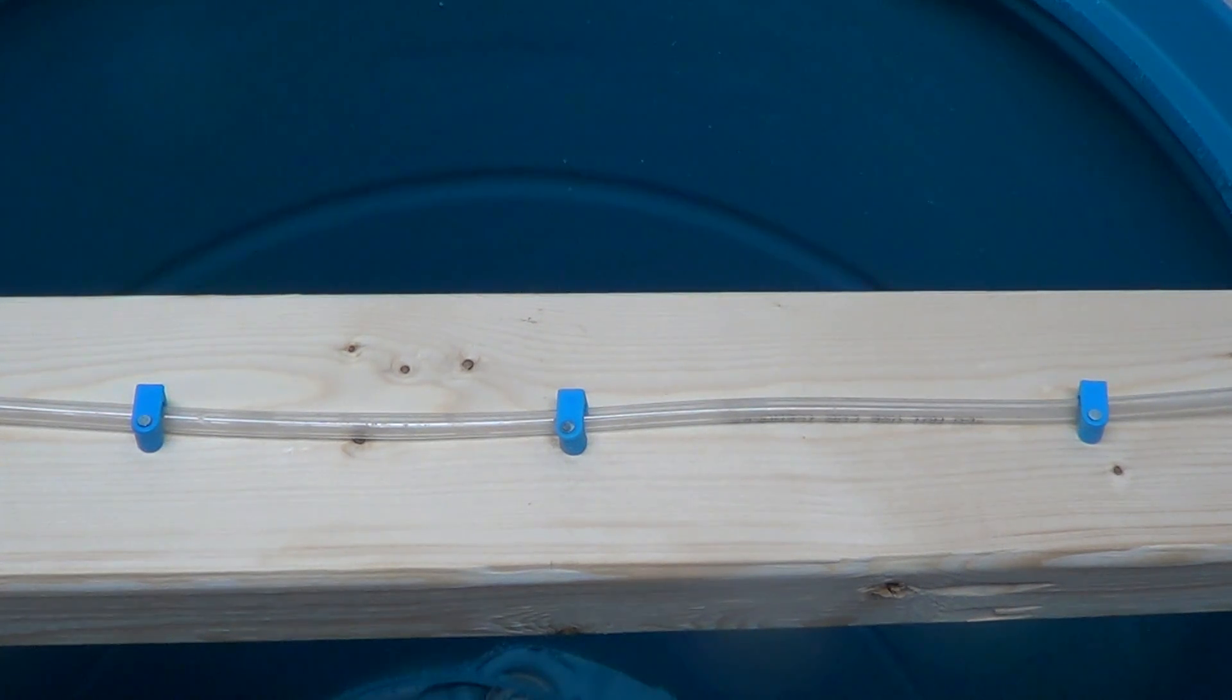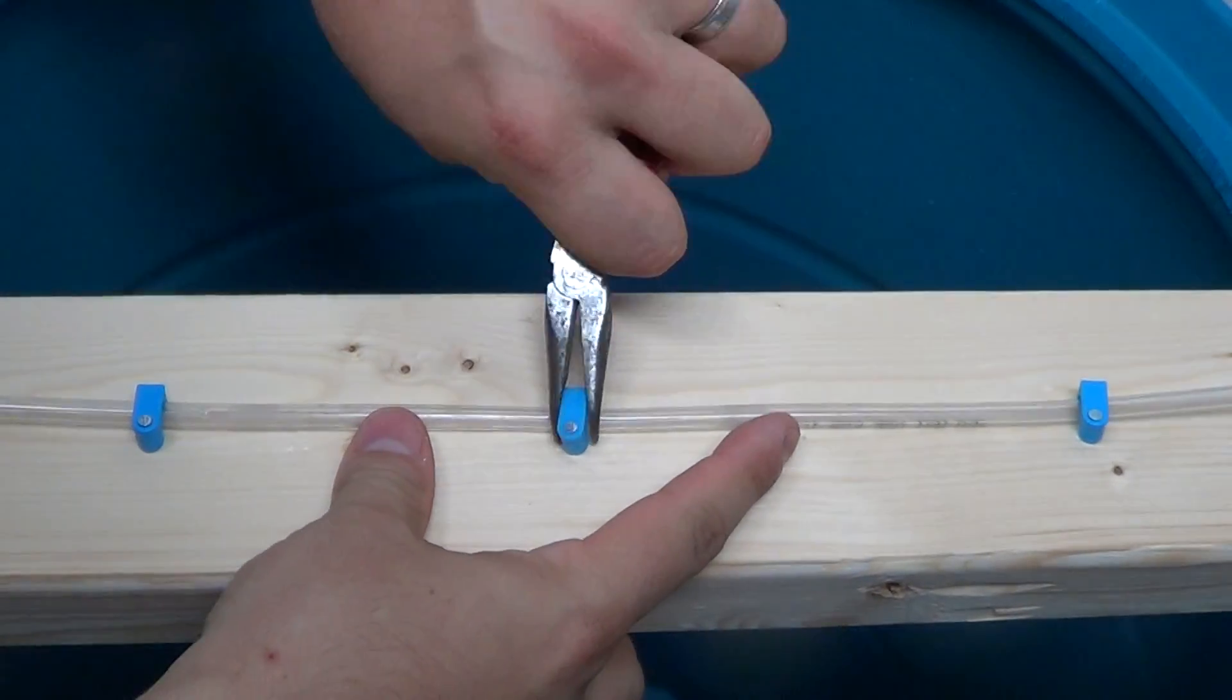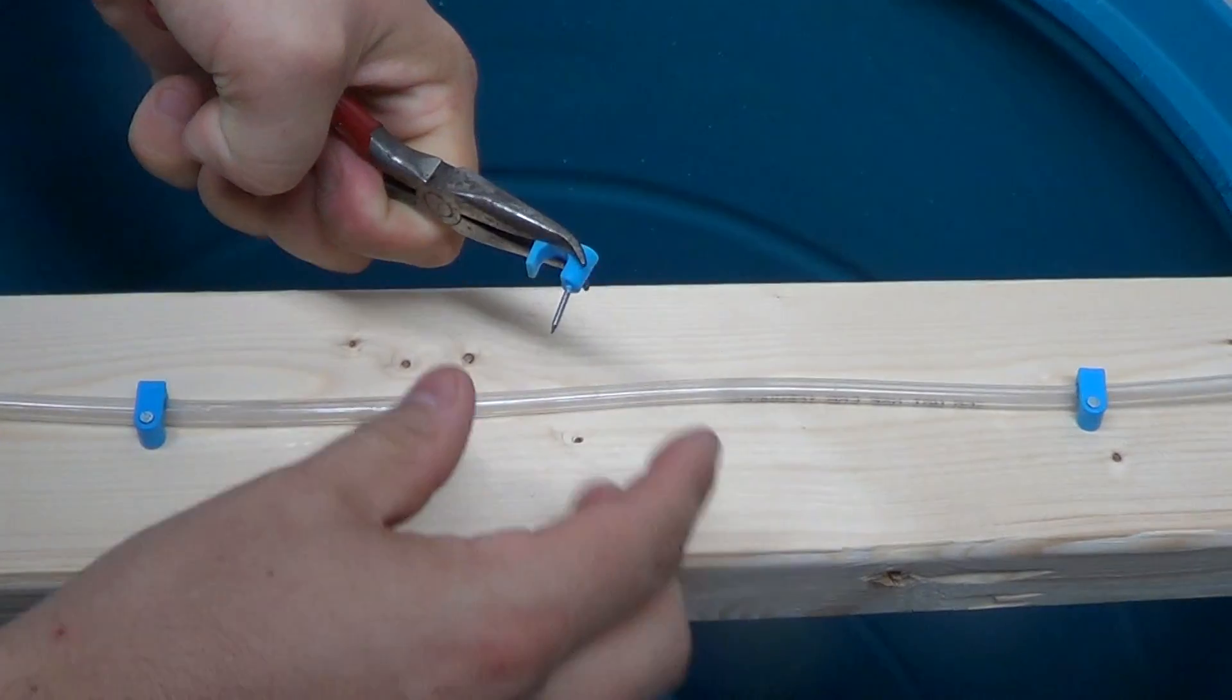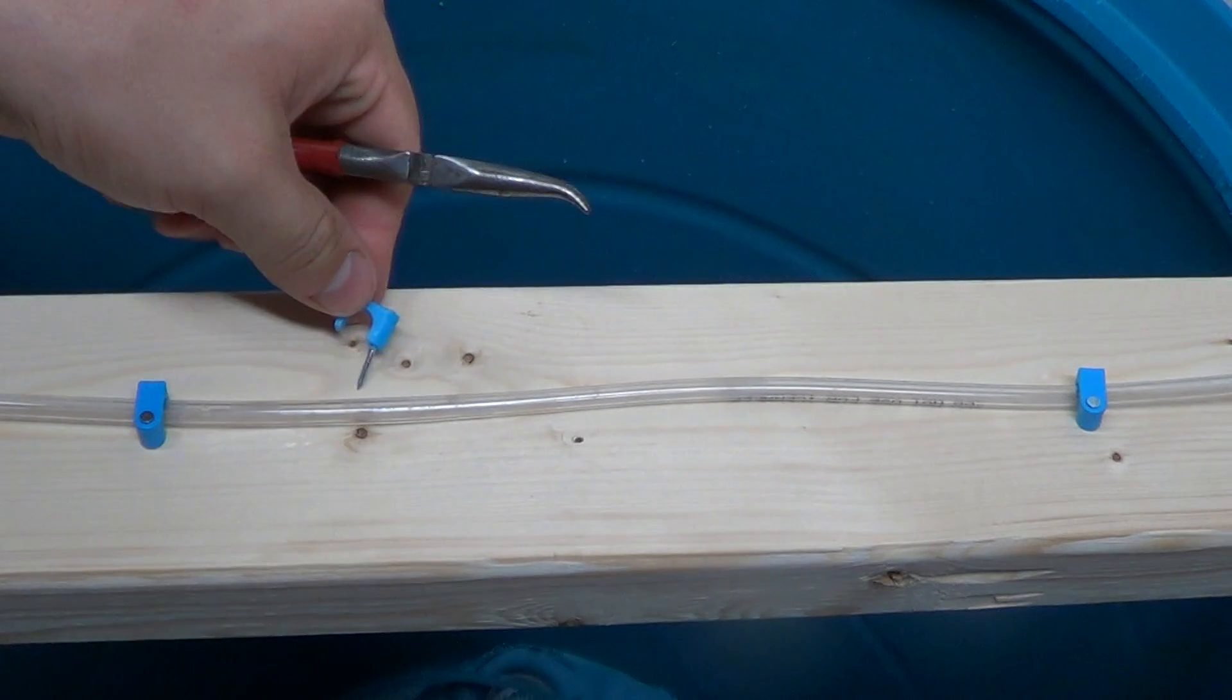And if you end up needing to move your airline hose, all you need to do is take a pair of pliers, wiggle that nail from side to side a few times, and it will pop right out. And as long as the nail is still relatively straight, you can go ahead and reuse those staples.